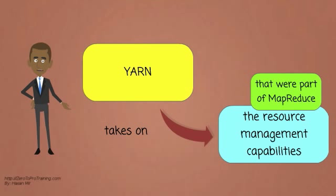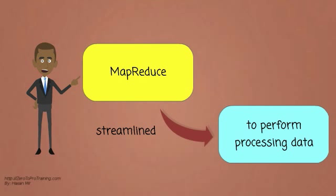YARN takes on the resource management capabilities that were part of MapReduce in earlier versions. MapReduce is streamlined to perform what it does the best. It now solely focuses on processing data.